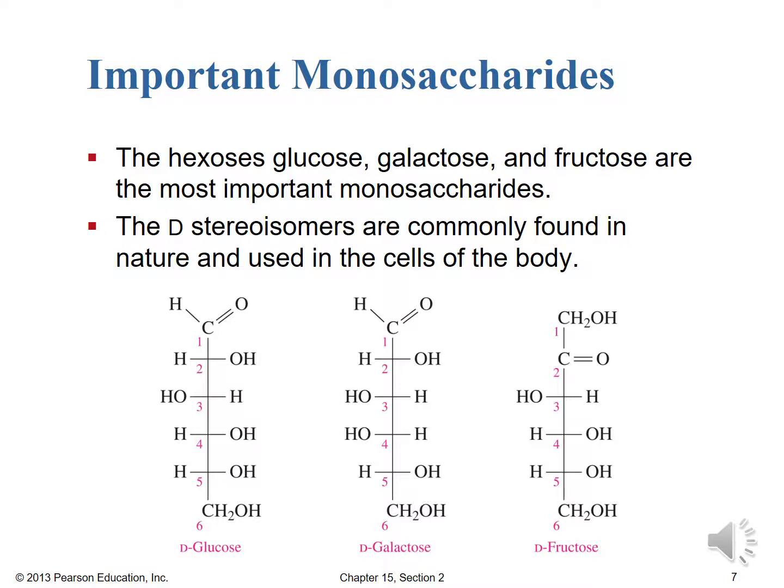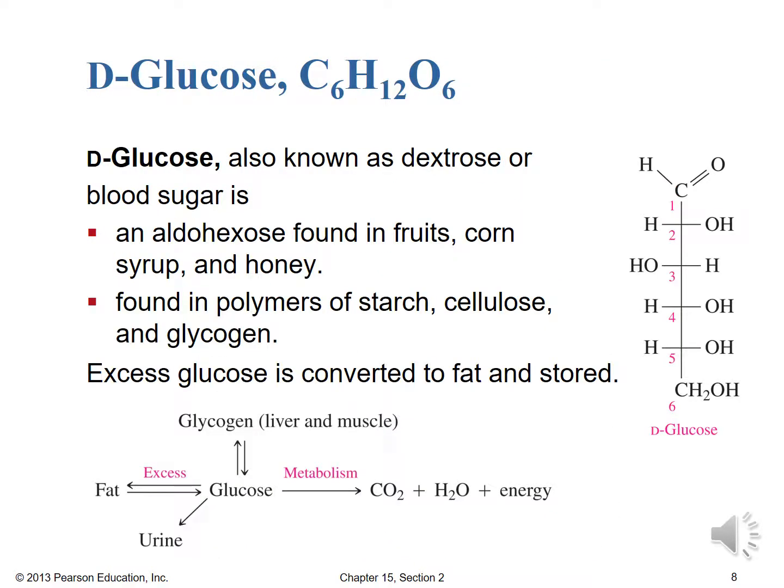Certain organisms can process L enantiomers, so you can't trick the body without consequences. Here are the Fischer projections for D-glucose, D-galactose, and D-fructose. D-glucose has the formula C6H12O6, like all hexose monosaccharides. It's also known as dextrose because it's the D form, or blood sugar — the one monitored most keenly by medical professionals. It's an aldohexose found in fruits, corn syrup, honey, and in polymers of starch, cellulose, and glycogen.